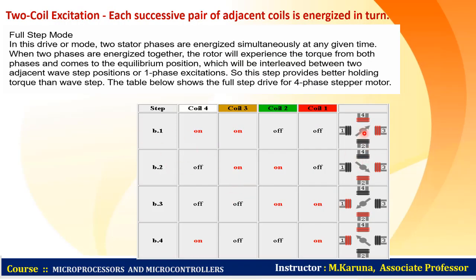The rotor can also be rotated with two coil excitation, where each adjacent pair of coils is energized in turn. For example, when current pulses are applied to coils 3 and 4, those coils become excited and become south poles. Because of the north pole of the rotor, it will try to attract towards coils 3 and 4, positioning the rotor between them. For the next step, pulses are given to coils 2 and 3, which become south poles and attract the north pole rotor to a position between coils 2 and 3.